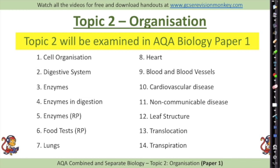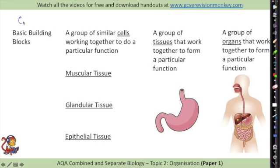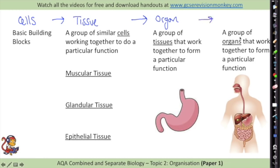Topic 2 for biology paper 1 is called organisation - it's all about how the different systems are organised within animals and plants. Cells are the basic building blocks of an organism. A group of similar cells working together to do a particular function is called a tissue. A group of tissues that work together to form a particular function is an organ. And a group of organs that work together to form a particular function is called an organ system.